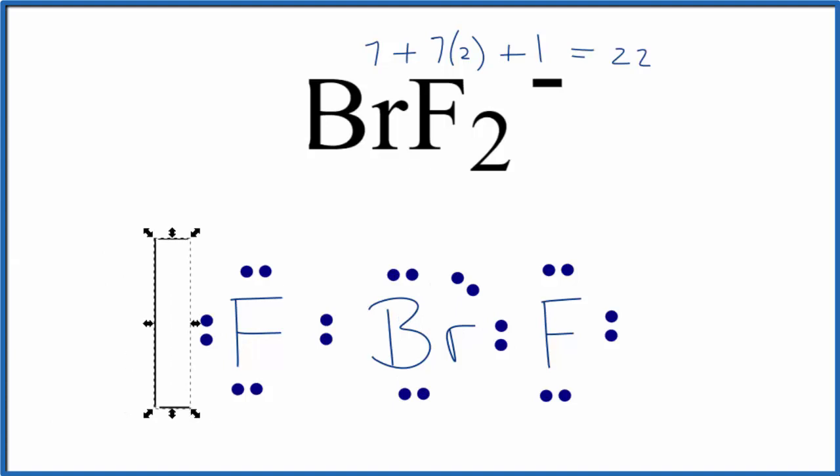We should also put brackets around the Lewis structure here for BrF2- to show that it's an ion, that it has that negative charge there. And then on the outside, we'll write this negative here, and that is the Lewis structure for BrF2-.